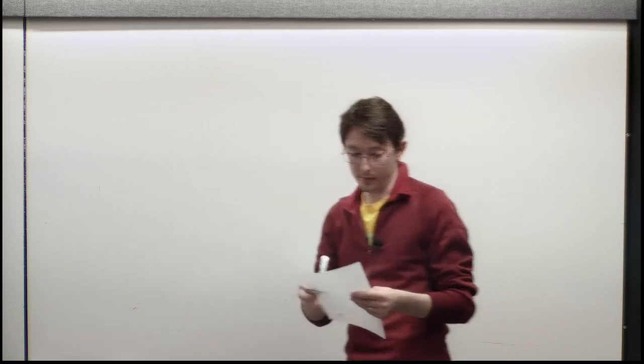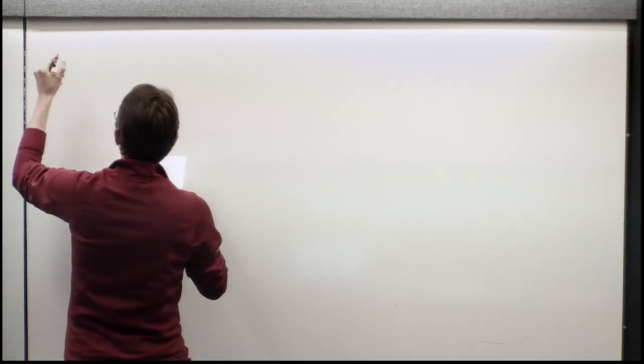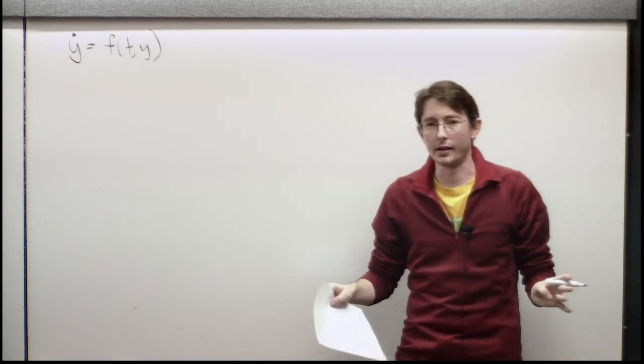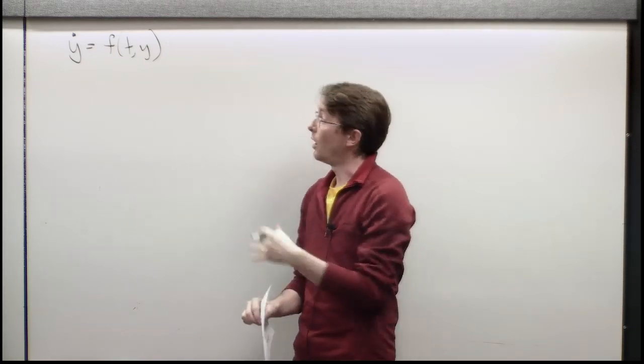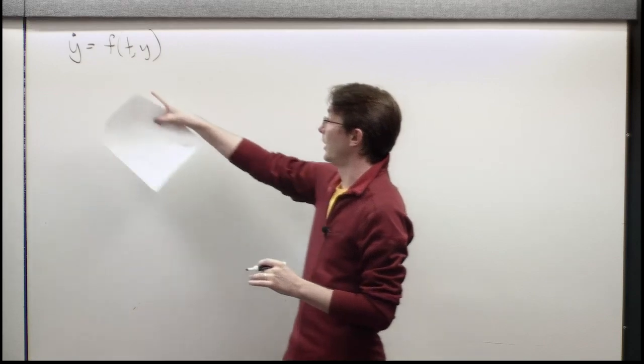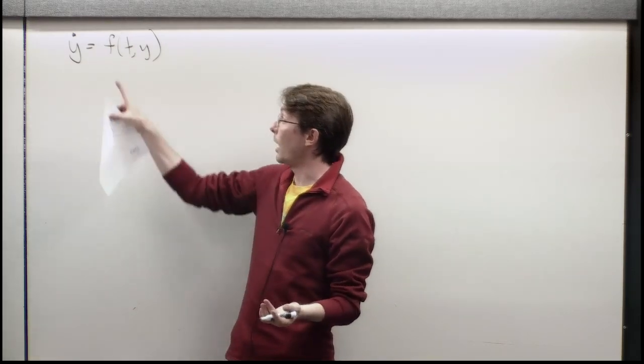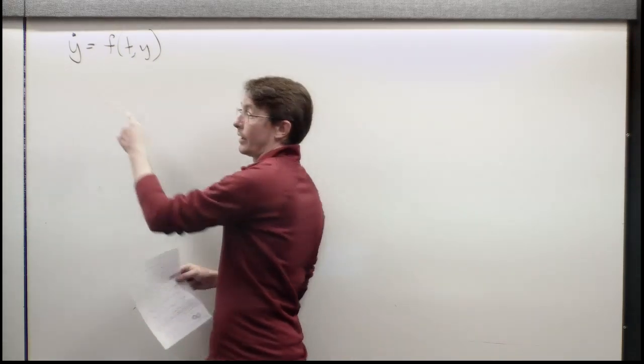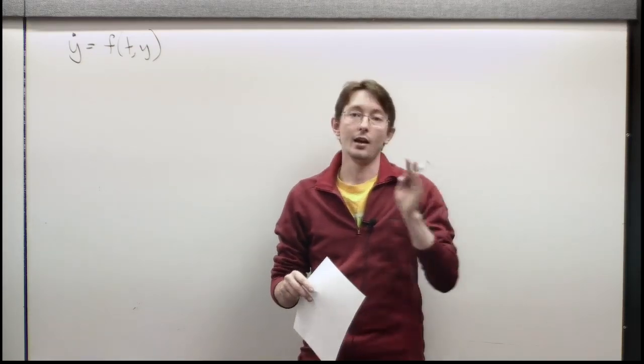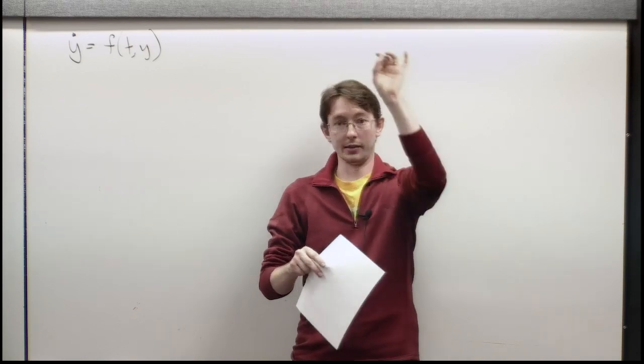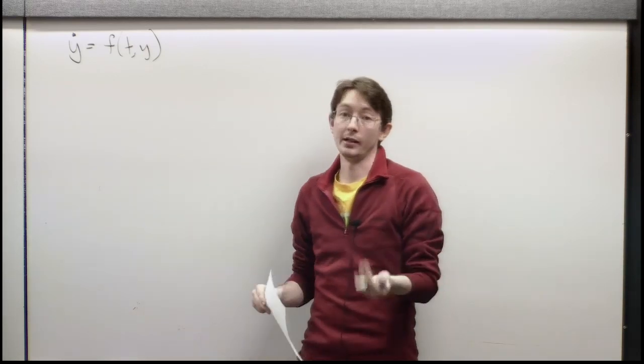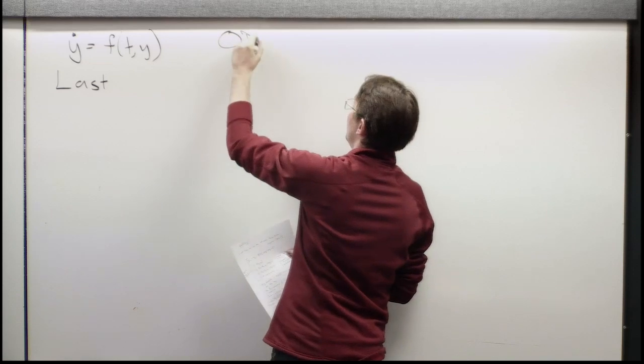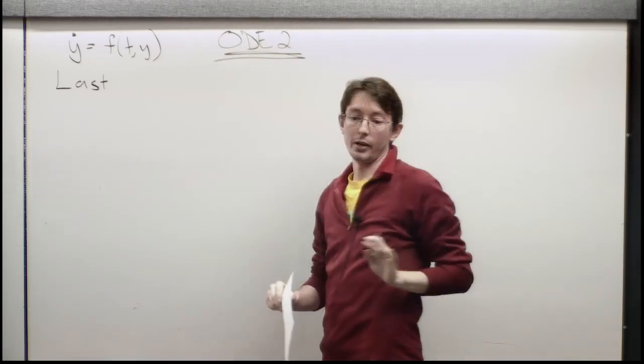I just want to review a couple of the concepts. We have a vector field Y dot equals F of T comma Y. I'm going to call this all kinds of things: an ordinary differential equation, a nonlinear ODE, a dynamical system because it changes in time, or I might say that F is a vector field. Because I think of Y as some kind of particle who has a trajectory in space, and F tells me what directions its velocity field is pointing at any time and at any location. Last time, maybe I'll just write ODE 2. We're in our second week of ODEs. This is very exciting.